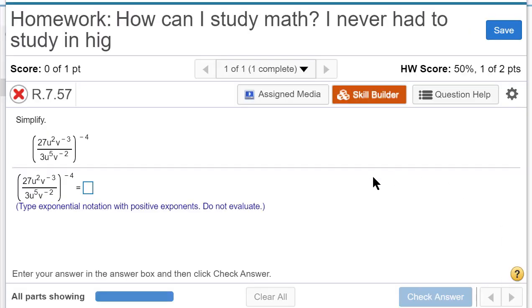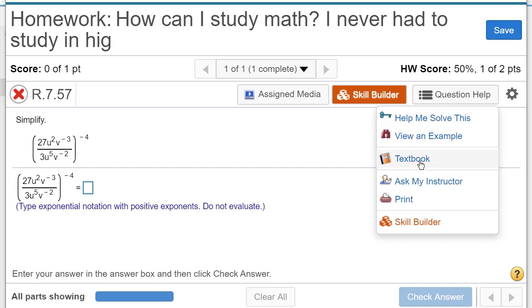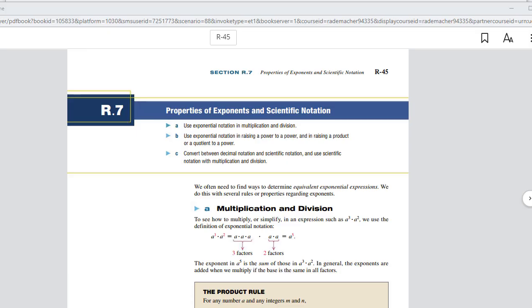Well, suppose that still isn't good enough. Let's click on question help. Notice the textbook is here. There's a link to the part of the textbook, section R.7, that talks about the textbook. Here's the textbook. Properties of exponents and scientific notation.